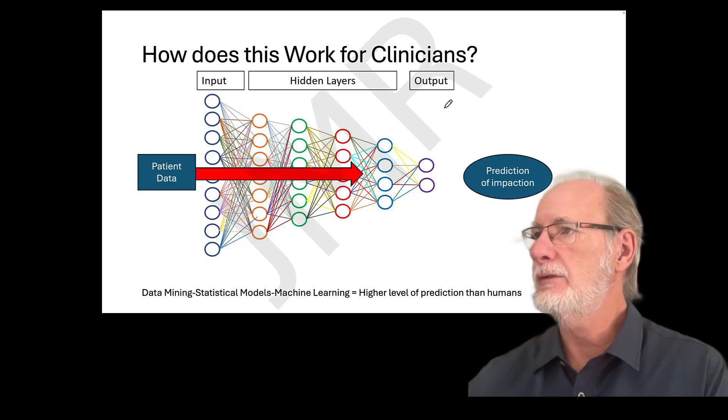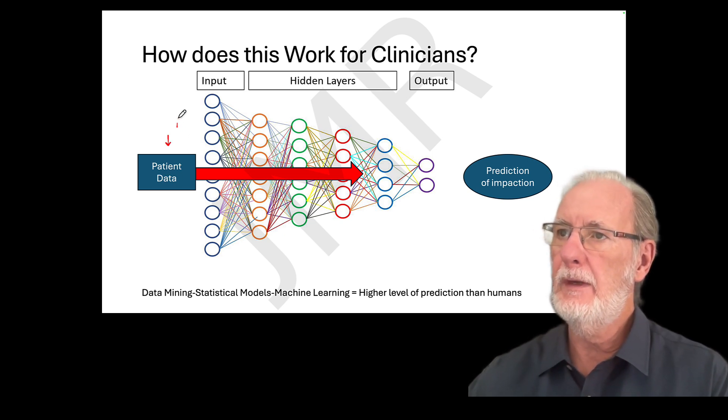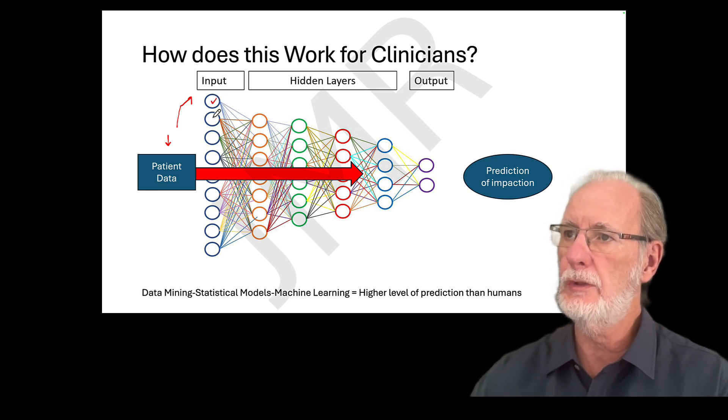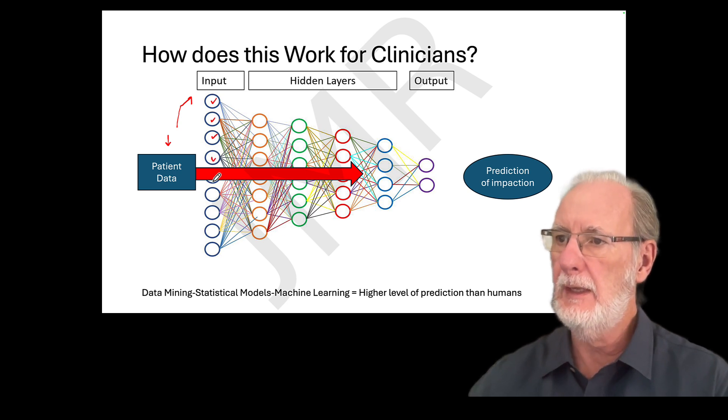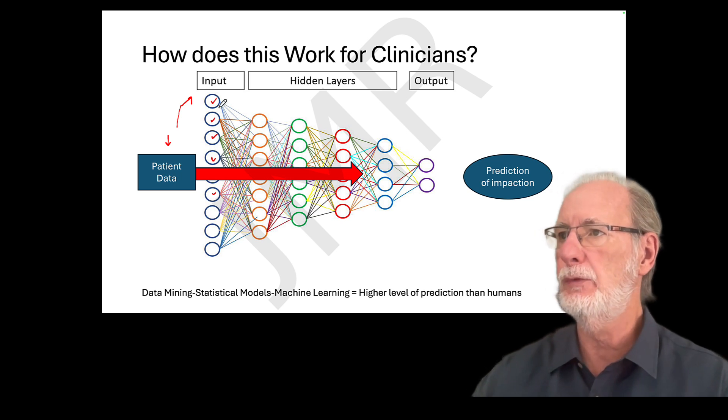So what about you, the clinicians? What am I going to do with this? Well, you're going to have a lot of patient data. From there, you will have some inputs like class of malocclusion, overjet, overbite, crowding, age of patients and how many more you want to input. So this is the input.